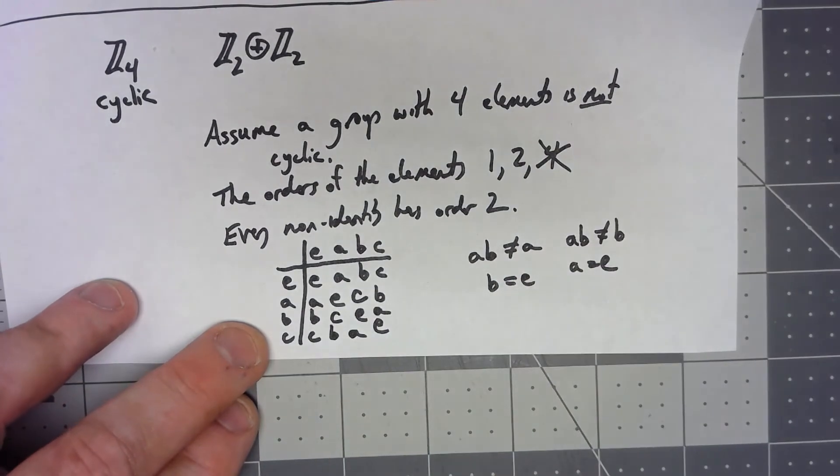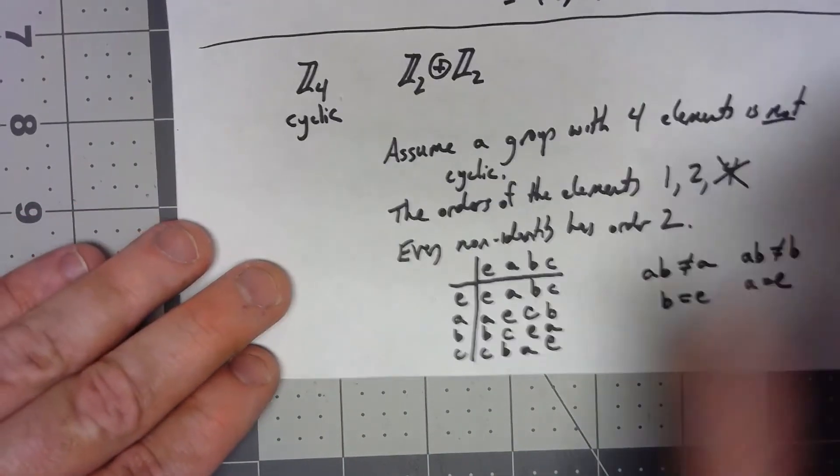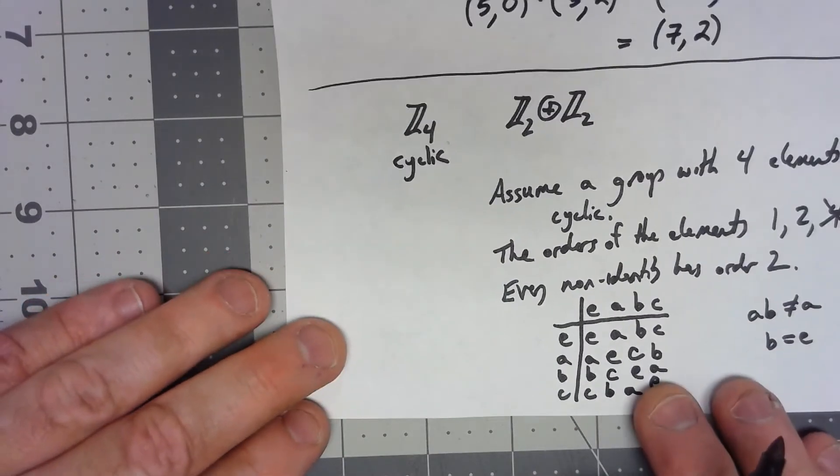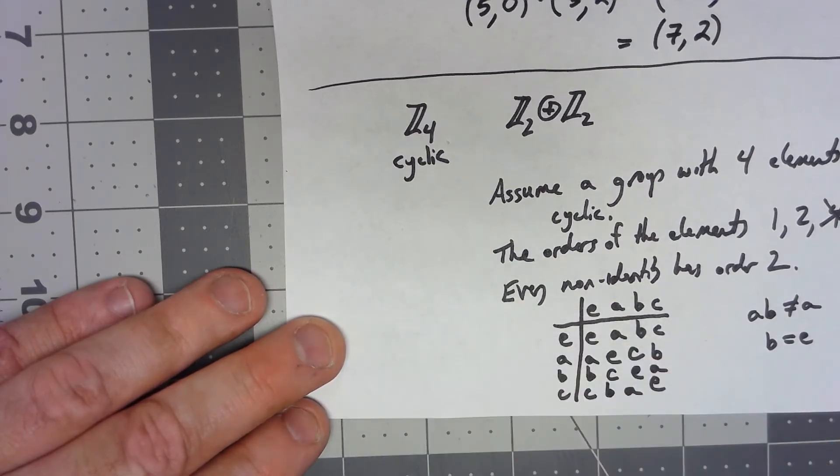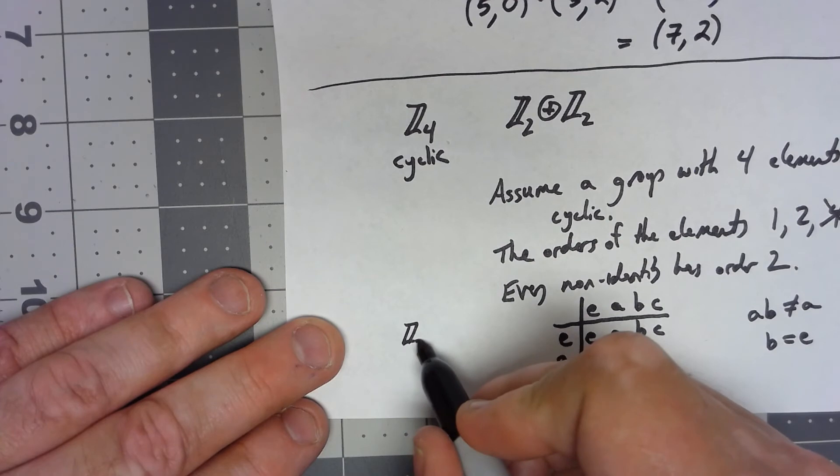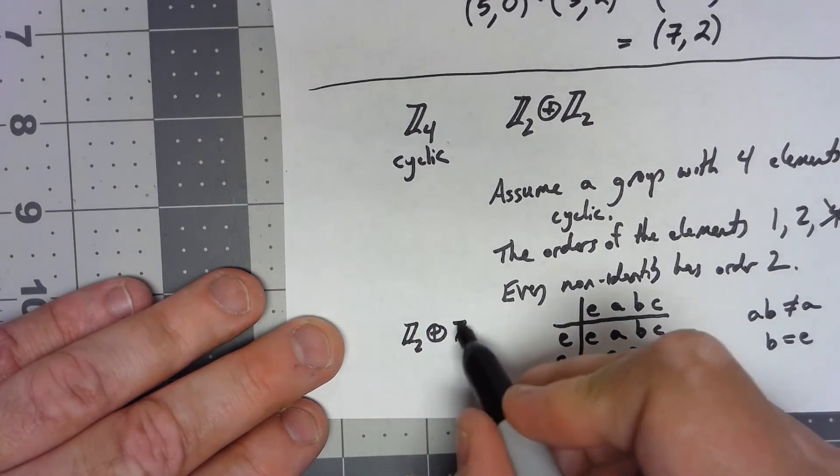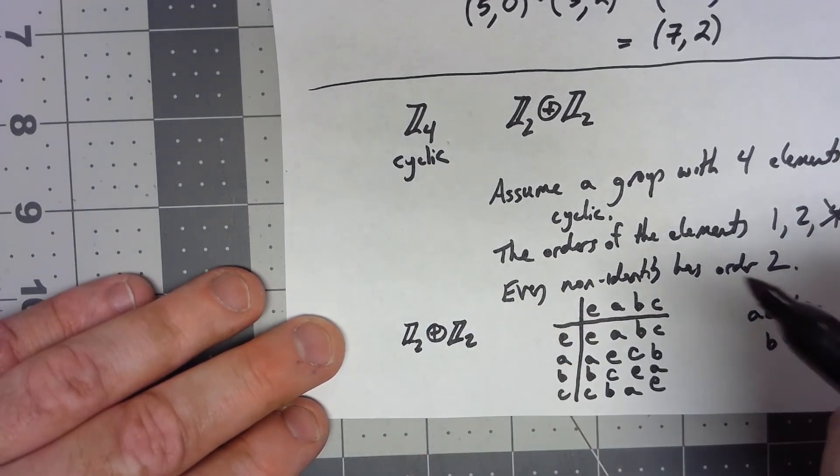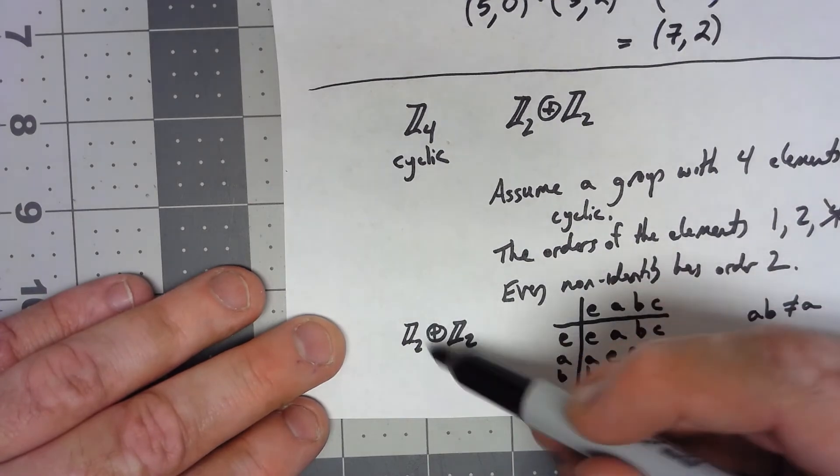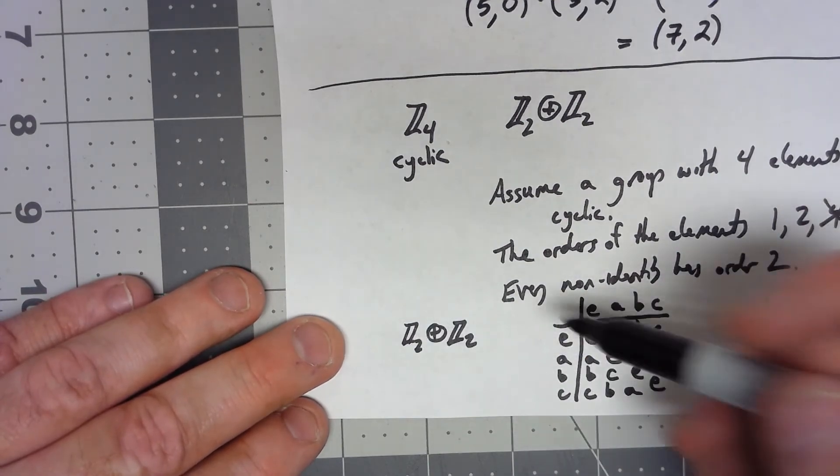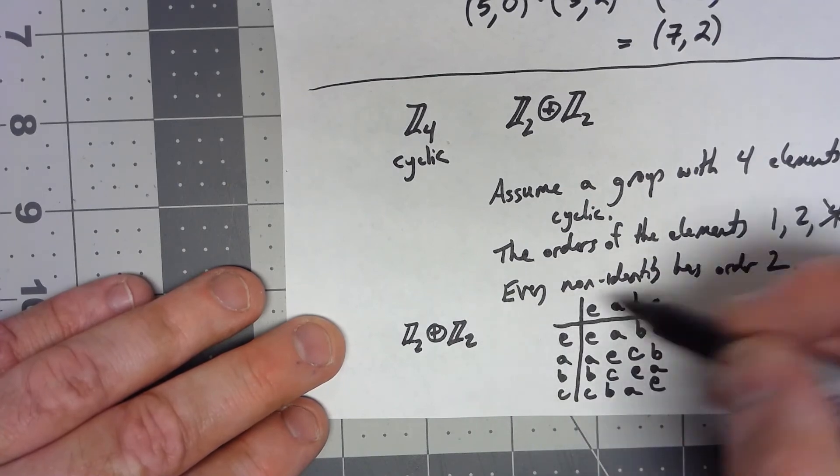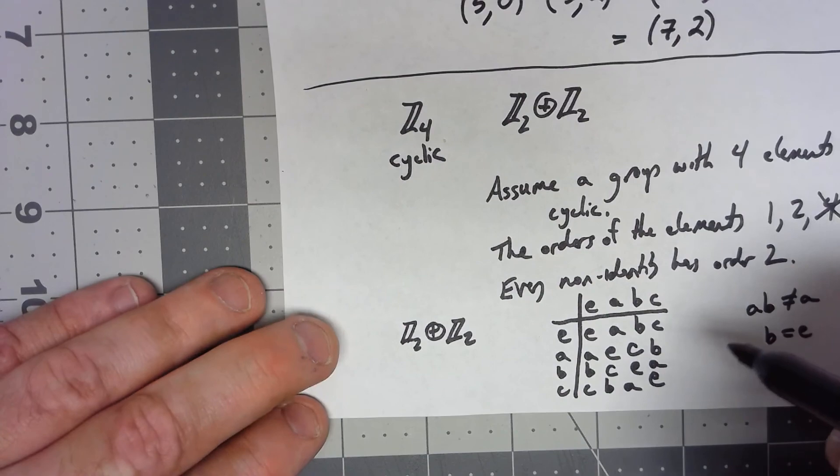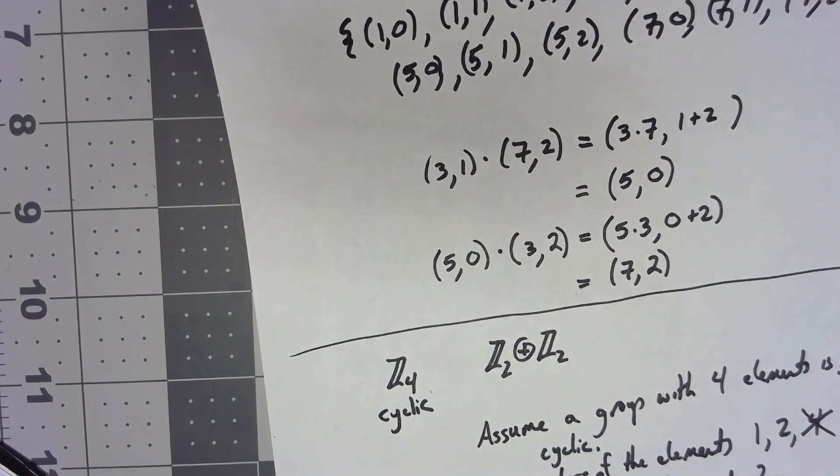Now we've got this Cayley table. I'm going to claim that that Cayley table is the same thing as the Cayley table for Z2 direct product Z2. And I think what you should do is try to create the Cayley table for Z2 plus Z2 and see how corresponding the elements would give exactly the same kind of Cayley table.